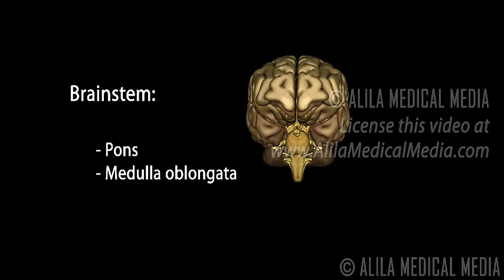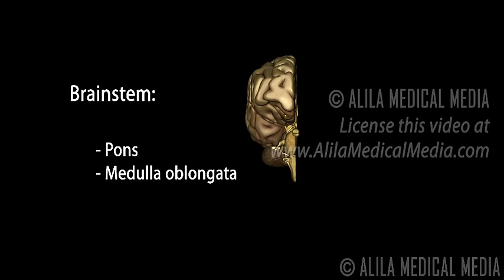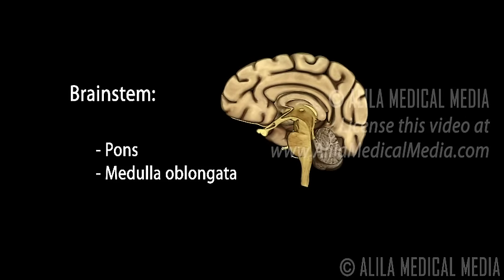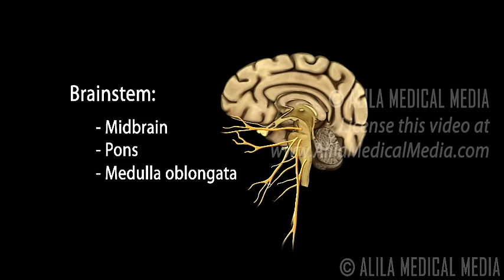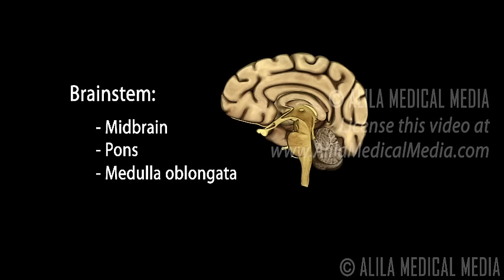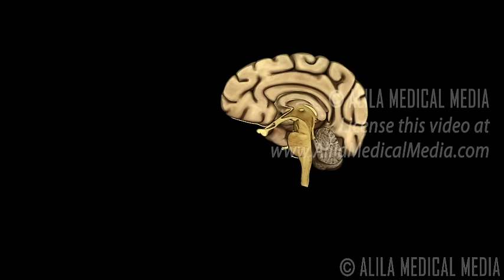The brainstem is located at the base of the brain and is continuous with the spinal cord. It houses all nerve connections between different parts of the central nervous system and provides innervation to the head and neck via cranial nerves. It also contains nuclei associated with important body functions such as regulation of blood pressure, respiration, swallowing, bladder control, and sleep cycle.